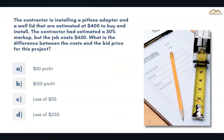The contractor is installing a pitless adapter and a well lid that are estimated at $400 to buy and install. The contractor had estimated a 50% markup but the job costs $650. What is the difference between the costs and the bid price for this project?